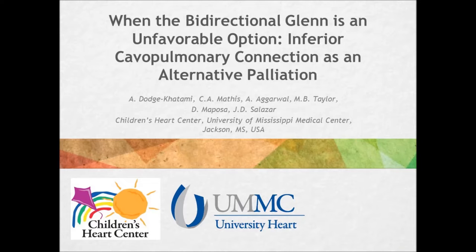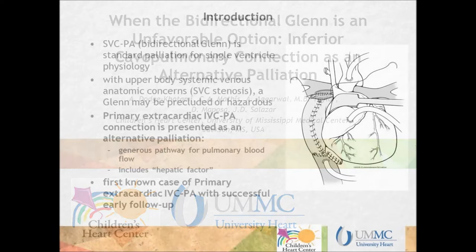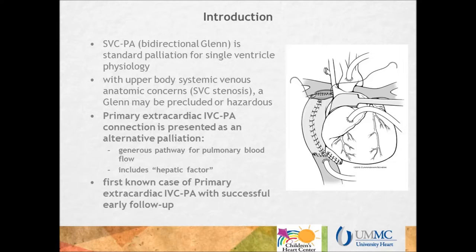When the bidirectional Glenn is an unfavorable option: primary extracardiac inferior cavo-pulmonary connection as an alternative palliation. The superior vena cava to pulmonary artery anastomosis, or bidirectional Glenn, is standard palliation for single ventricle physiology. With upper body systemic venous anatomic concerns such as SVC stenosis, a Glenn may be precluded or hazardous. The primary extracardiac inferior vena cava to pulmonary artery connection is presented as an alternative palliation, providing a generous pathway for pulmonary blood flow and including hepatic factor if such an entity exists. We present the first known case of primary extracardiac IVC to PA connection with successful early follow-up.